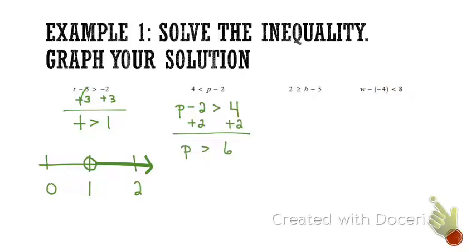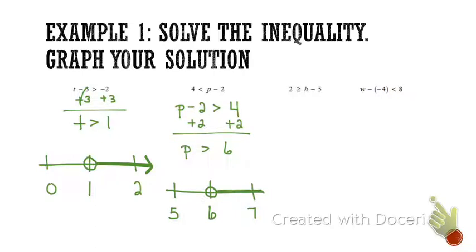Now I'm ready to graph my solution. What number would go in the middle? Hopefully you're saying 6, because that's my cutoff number — 1 below and 1 above. Would it be an open dot or a closed dot? We should be saying open. All solutions must be greater than 6, so my line and arrow are going to the right.